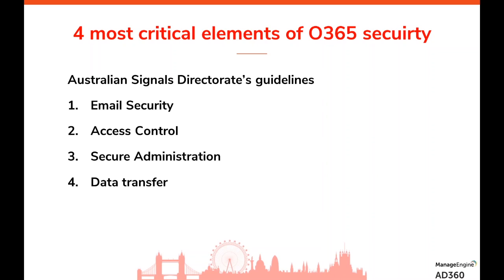We're breaking down the critical components of security for Office 365. Access control is absolutely critical — we need a close watch on who has what access and permissions, how to restrict and manage them. For example, imagine getting a real-time alert whenever a new user is added to the Office 365 admin group — a buzz on your mobile, email notification, even an SMS.